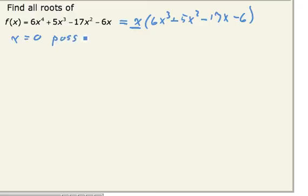So the possible rational roots are going to be numbers which divide 6, divided by numbers which divide 6. The numbers which divide 6 are plus or minus 1, 2, 3, and 6.